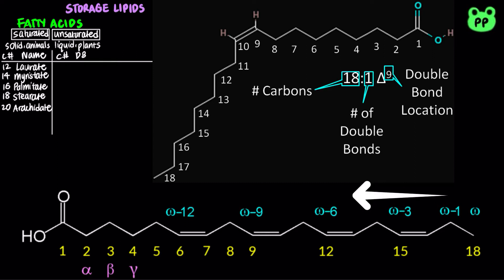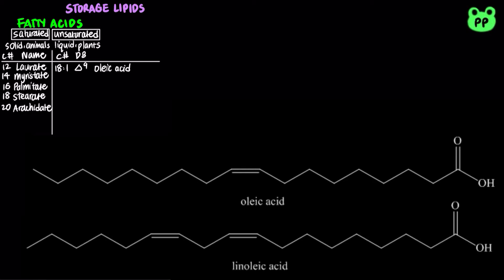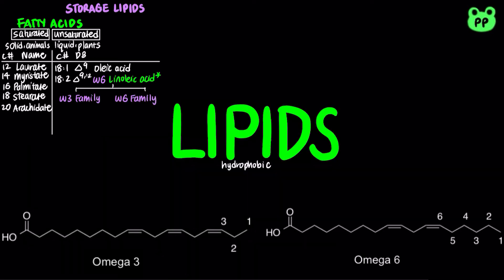The positions of double bonds are indicated relative to the omega carbon. The monounsaturated 18-carbon fatty acid with a double bond at the 9-carbon is known as oleic acid. The 18-carbon fatty acid with double bonds at the 9 and 12-carbons is known as linoleic acid, which can only be synthesized by plants and other microorganisms. Therefore, it is an essential fatty acid for animals. Linoleic acid is an omega-6 fatty acid that serves as a precursor to two families of polyunsaturated fatty acids: the omega-3 family and the omega-6 family.